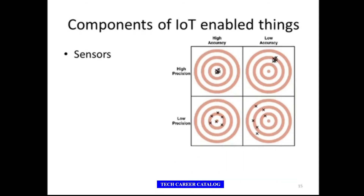A sensor measures with precision, accuracy, and resolution. Two key concepts to understand are precision and accuracy. As you can see in the graph: high precision and high accuracy means all inputs land in the bullseye. High precision but low accuracy means you get consistent readings but off the mark. Low precision but high accuracy means samples are scattered around the target. The worst case is low precision and low accuracy. We must measure and calibrate sensors accordingly before putting them to work.